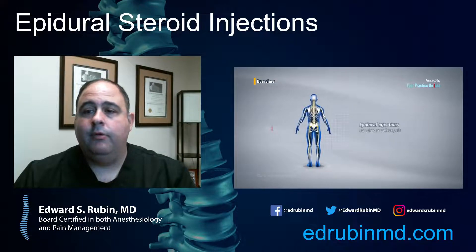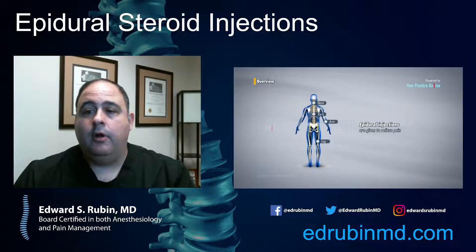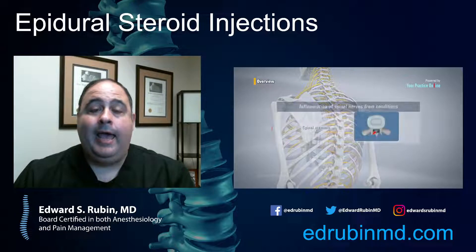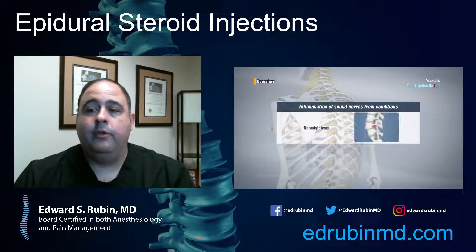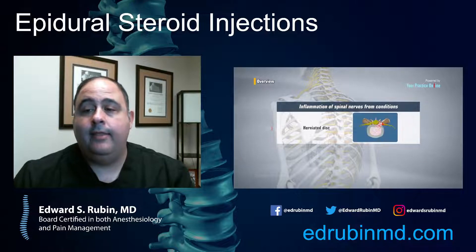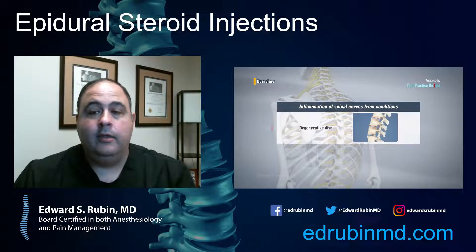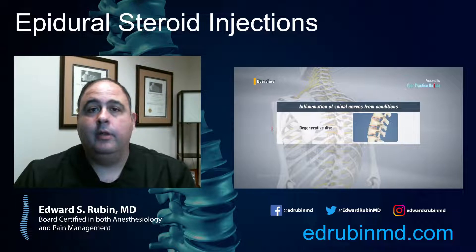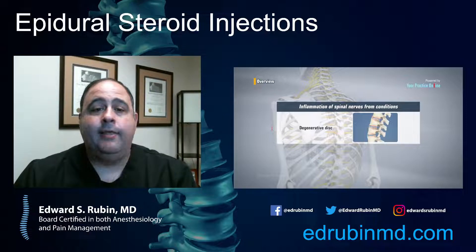The epidural space is literally just a space in your spine. That space runs all up and down your neck to your lower back, and that space is where the spinal nerves and the discs essentially live. By targeting those areas with anti-inflammatory medication — essentially a cortisone shot into the spine — you can give the nerves and the discs a bath of steroid to reduce inflammation.